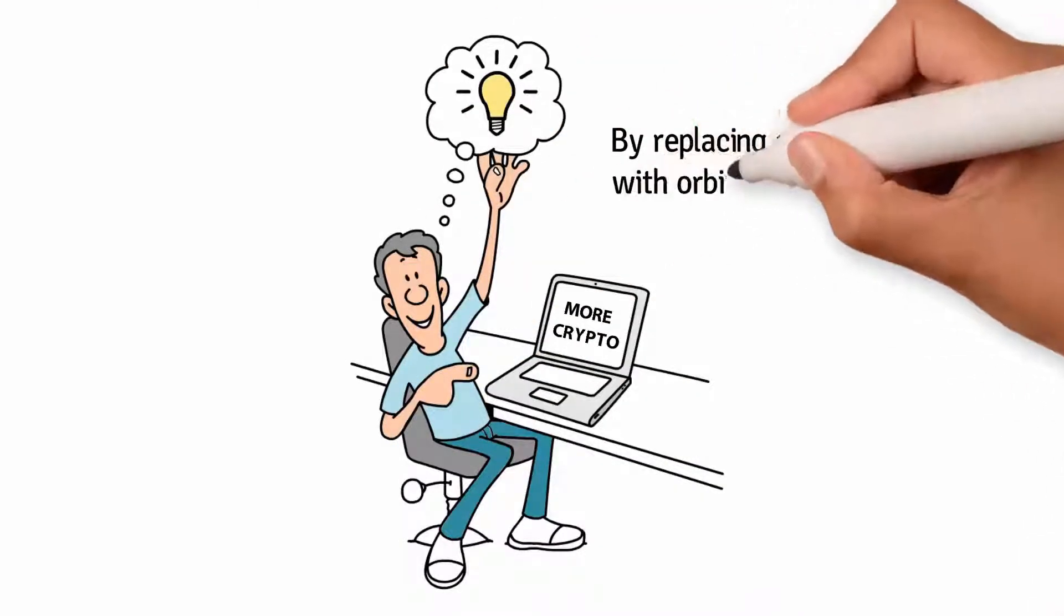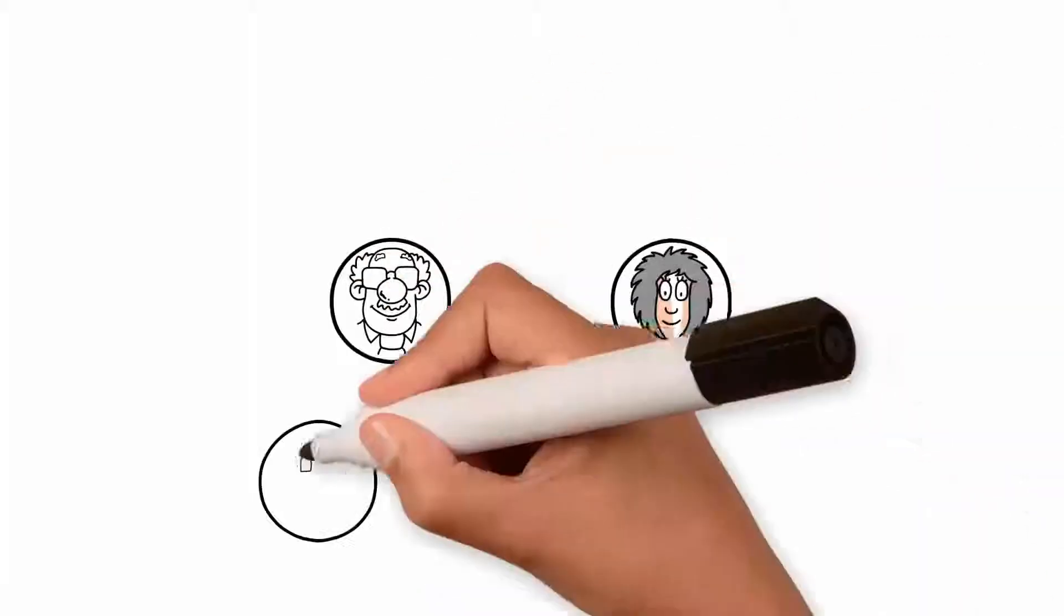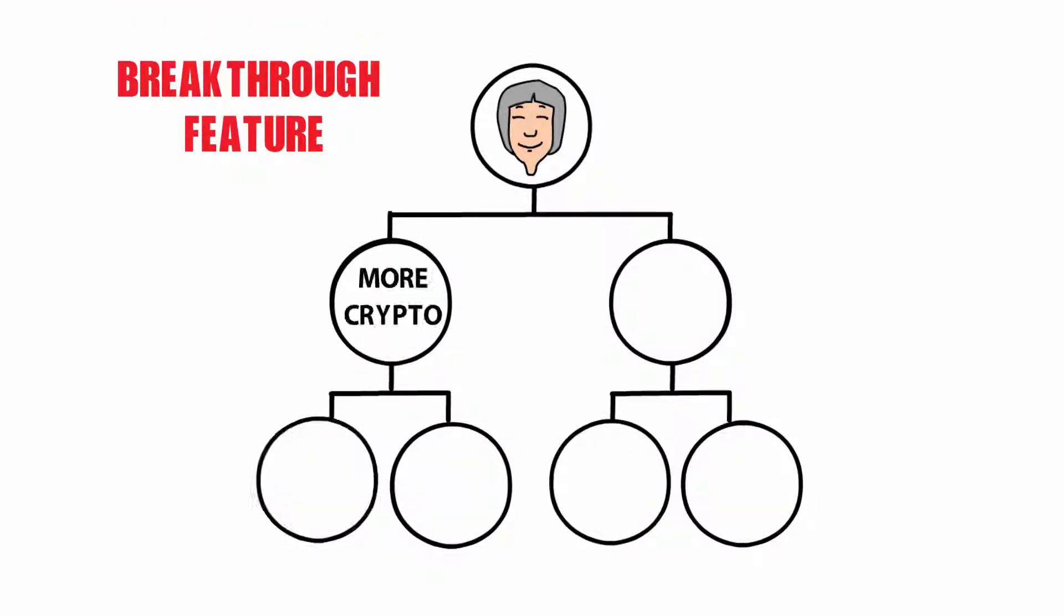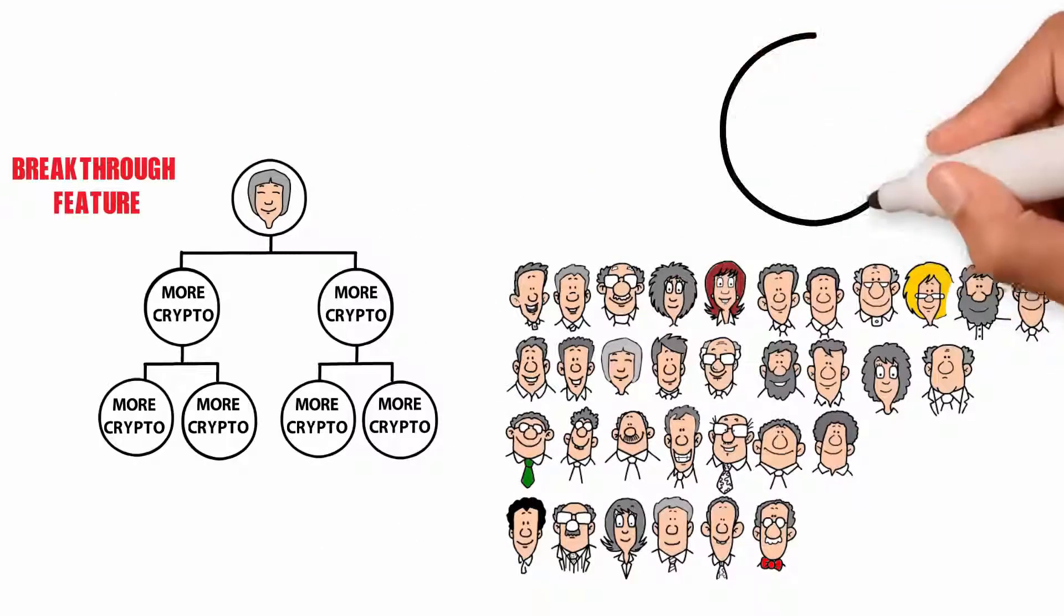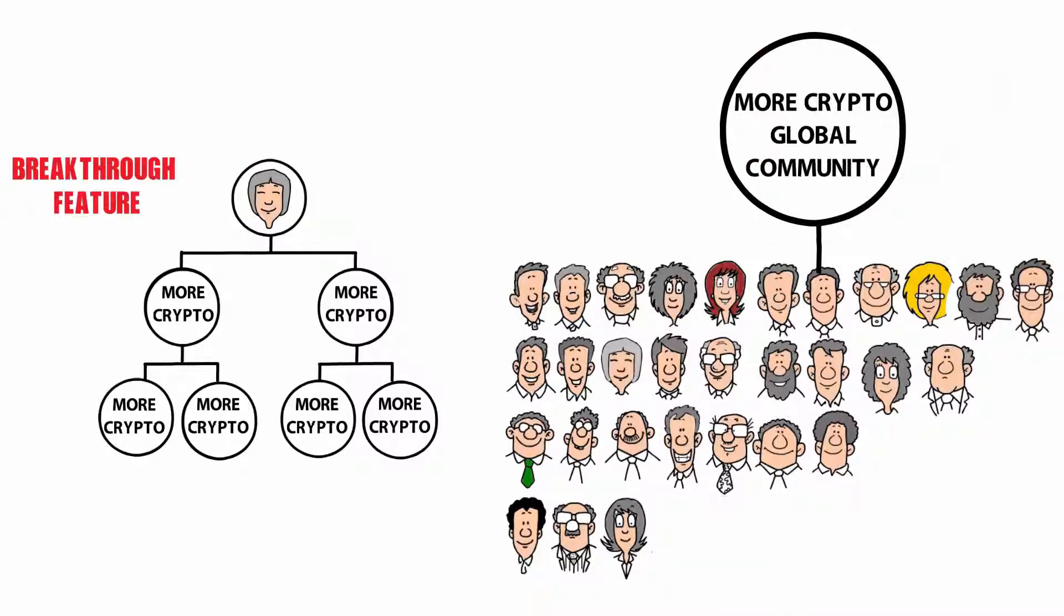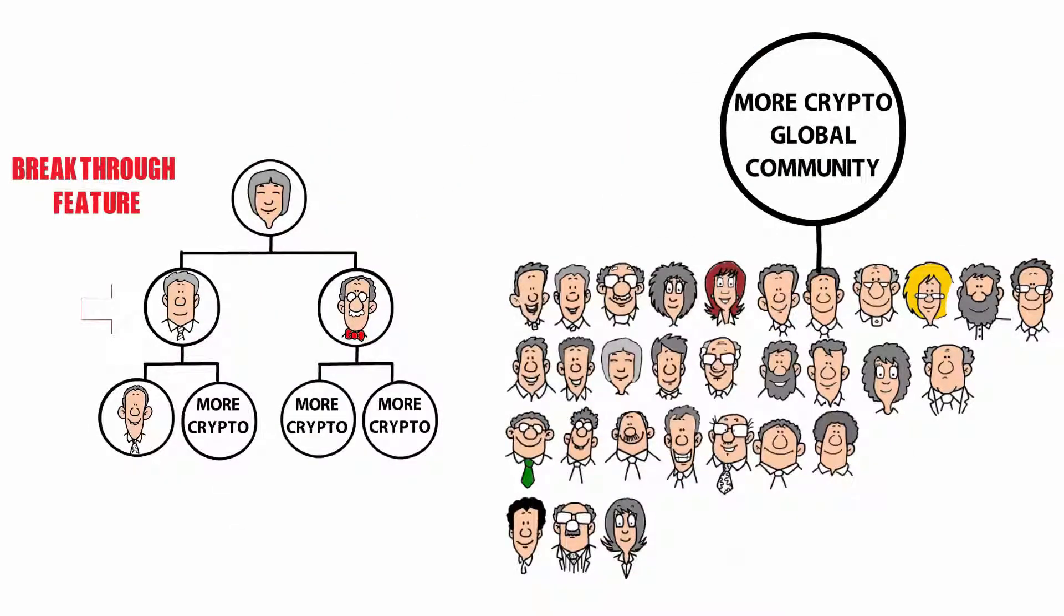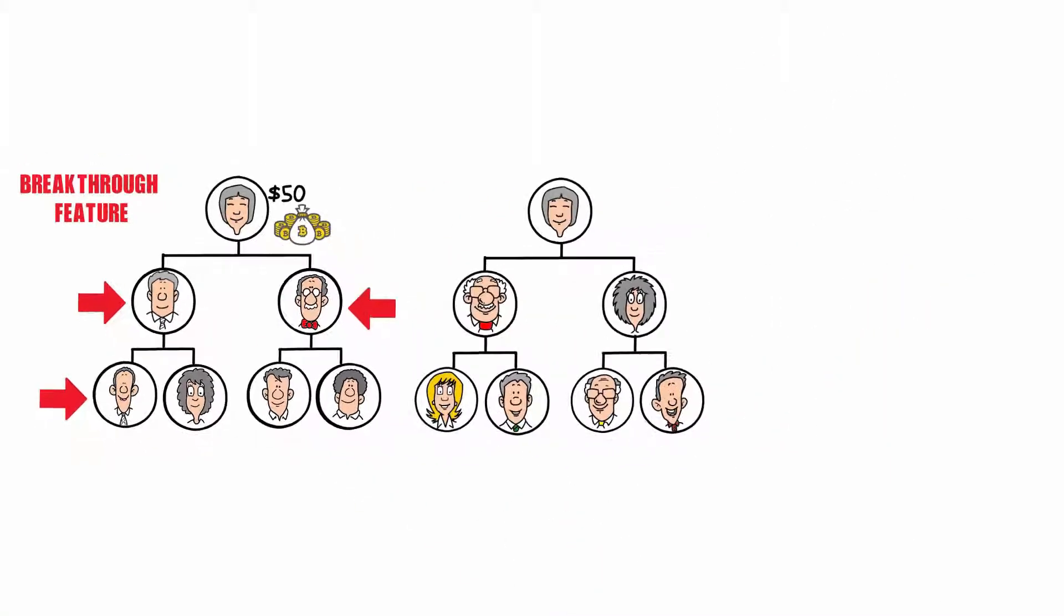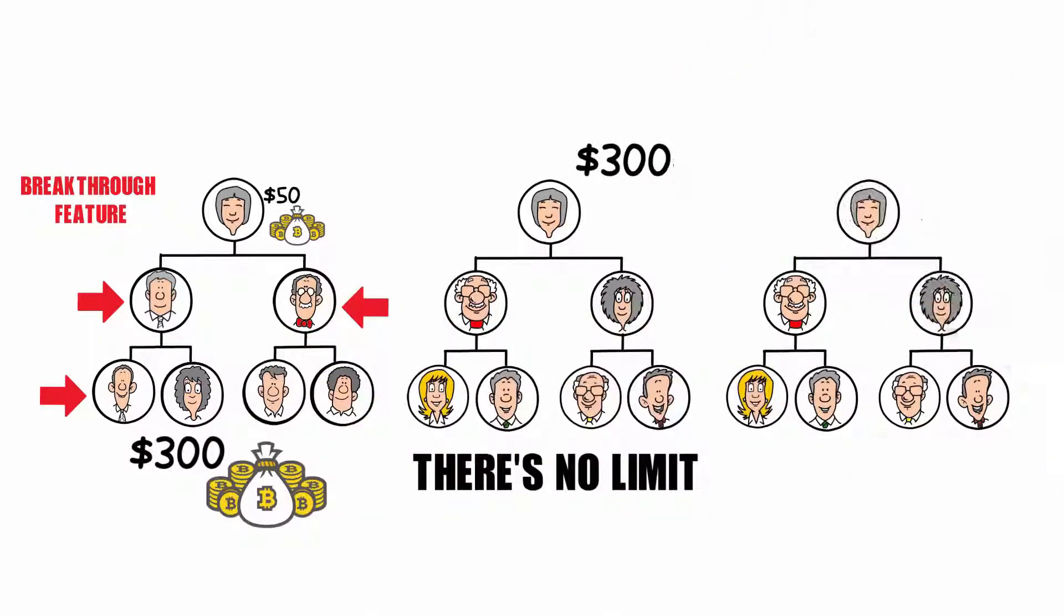More Crypto invented a better way by replacing cycling matrices with orbiting matrices. Instead of having your personally referred follow you matrix to matrix as cycling matrices do, we designed a breakthrough feature so that the More Crypto global community follows you matrix to matrix with orbiting matrices. This means members not in your direct team can fill positions in your 2x2 orbiting matrix. Each time a new or re-entry sale from the global community is placed in your 2x2 orbit, you get $50 in bitcoin. Once your 2x2 is filled, you can get another one, then another one, then another one. There's no limit to getting 2x2 orbits, each paying you $300 in bitcoin.